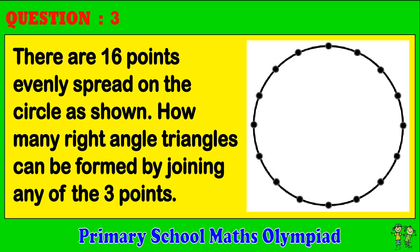Question 3. There are 16 points evenly spread on the circle as shown. How many right angle triangles can be formed by joining any of the three points?